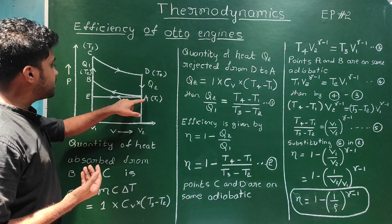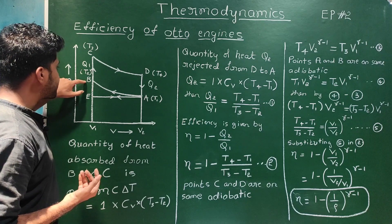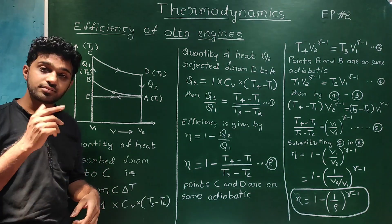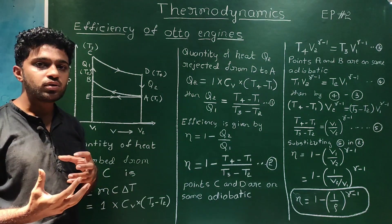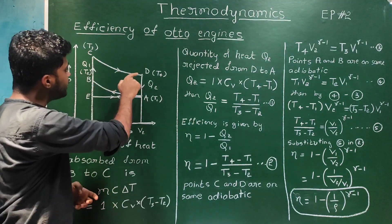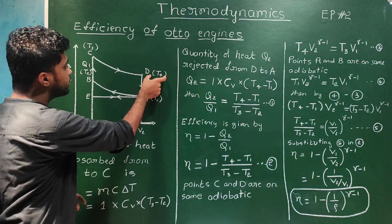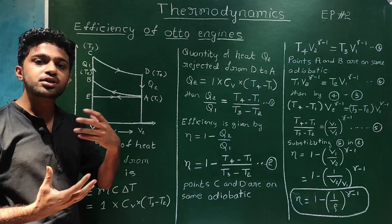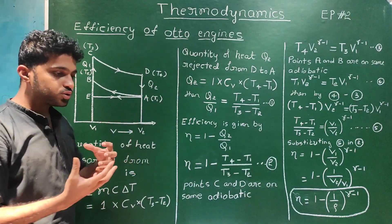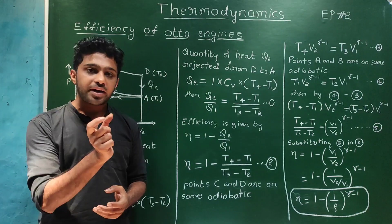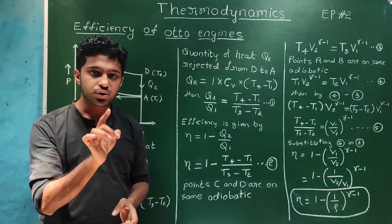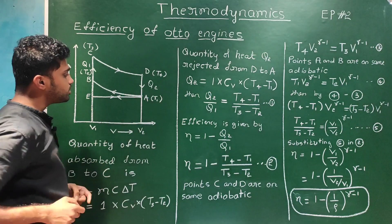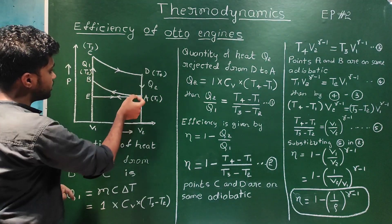When you compress, the temperature is T2 at point B. Then heat is generated and temperature rises to T3 at point C. Next is the working stroke: C to D is the working stroke where work is done by the engine and the temperature becomes T4. Then the exhaust valve opens in the cylinder and the unburnt particles are expelled — this is the exhaust stroke. So the four strokes are: charging stroke, ignition, working stroke, and exhaust.